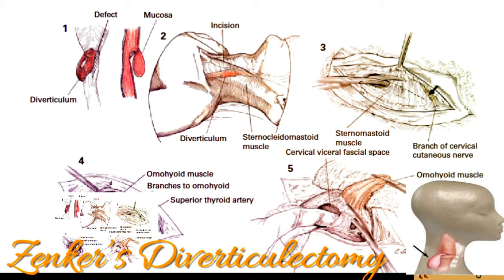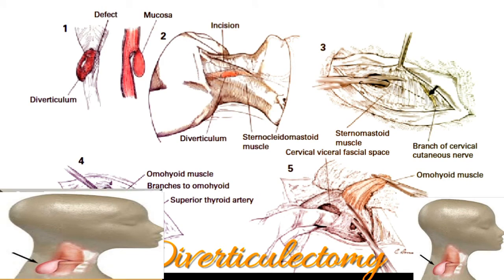Hemostasis is obtained by 0000 ligature. The inferior end of the omohyoid muscle is retracted posteriorly while the superior end is retracted medially. As the middle cervical fascia investing the omohyoid and strap muscles is divided in the upper portion of the wound, the superior thyroid artery is exposed, divided between clamps, and ligated.